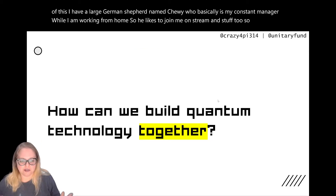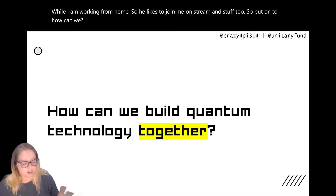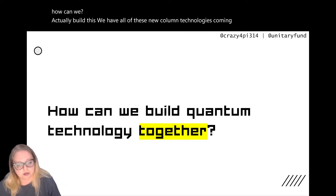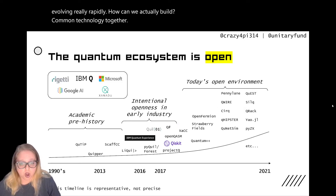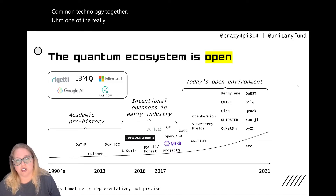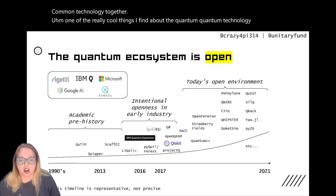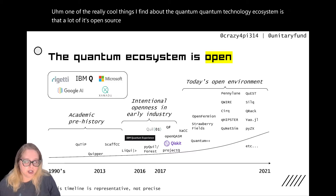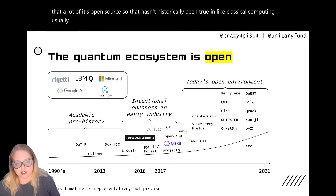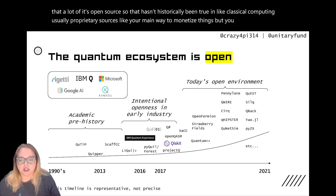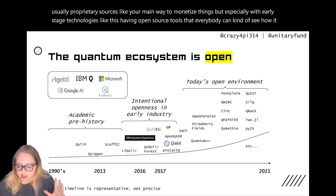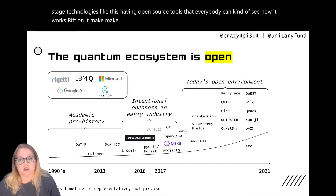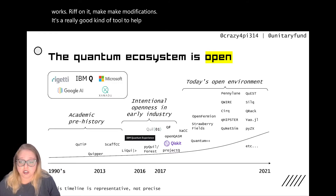How can we actually build quantum technology together? One of the really cool things I find about the quantum technology ecosystem is that a lot of it's open source. That hasn't historically been true in classical computing — usually proprietary source is your main way to monetize things. But especially with early stage technologies like this, having open source tools that everybody can see how it works, riff on it, make modifications — it's a really good tool to help grow the field.